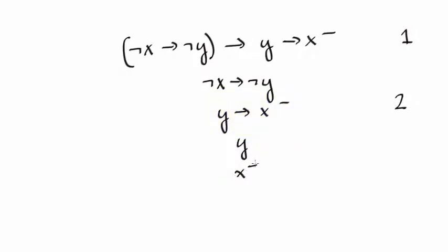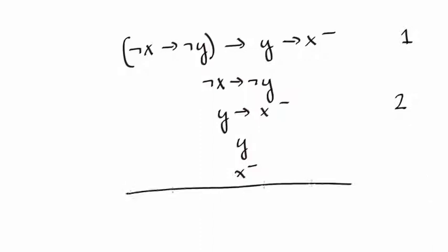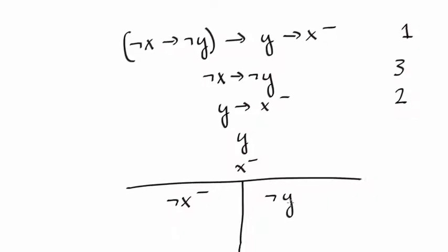Now we work on the positive implication: not x implies not y. Recall that the tableau rule for a positive implication, s implies t plus, branches into two. On one side we add s minus and on the other we add t plus. In this case we branch and add not x minus to one side and not y plus to the other.